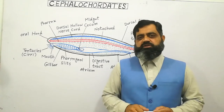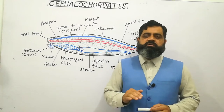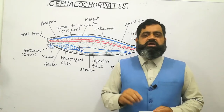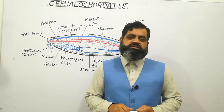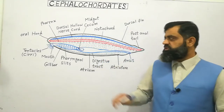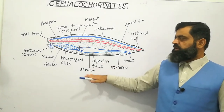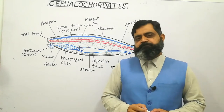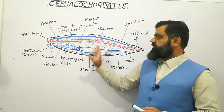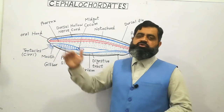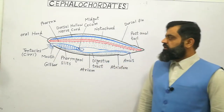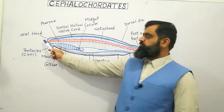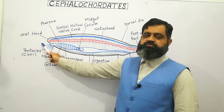These animals are very small, only five centimeters long, and are usually found in the sediments in seawater, burrowed in the sand present in the bed of the seawater. These animals are usually found at the bottom of the seawater, embedded in the sand. Usually their whole body is buried and only the front portion of the body is projected outside the sand.